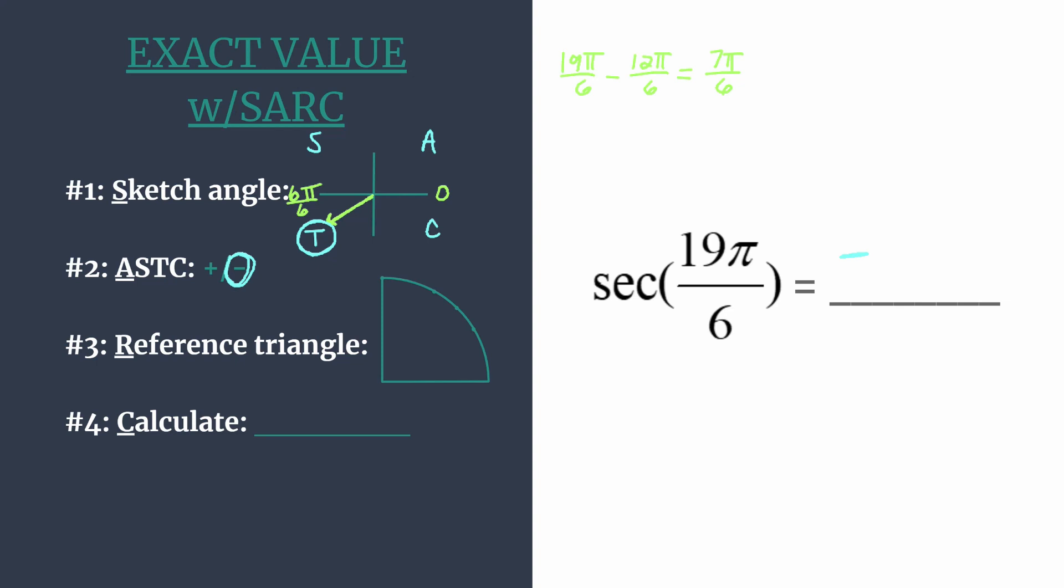In step 3, we find our reference triangle. First we need our reference angle, which is the amount of rotation from the terminal side to the x-axis. When we were sketching, we found that 7π over 6 is just 1π over 6 past π. So our reference angle is π over 6, which in degrees is 30°, meaning we're dealing with the 30-60-90 special right triangle. Our coordinates are √3 over 2 for x and 1/2 for y.